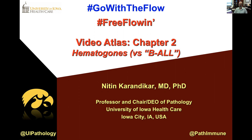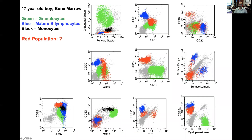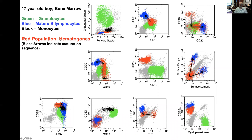To know that, we need to know what hematogones look like. This is what hematogones basically look like. This is a 17-year-old boy's bone marrow. As labeled here, the green are the granulocytes, the black cells are the monocytes. This blue population is a nice internal lymphocyte control — these are the mature B lymphocytes, nicely splitting into kappa and lambda and CD20 positive. We will focus on this red population, which is hematogones.